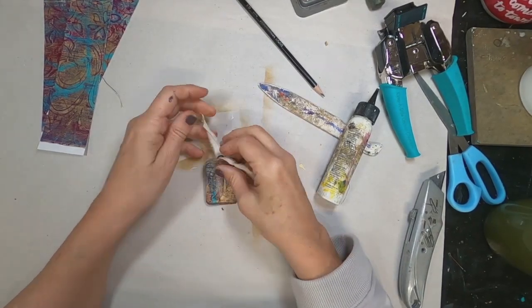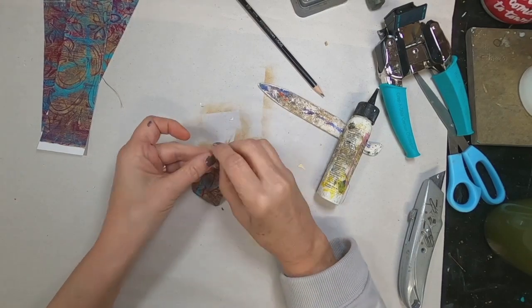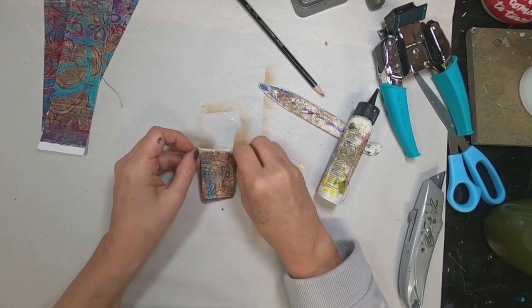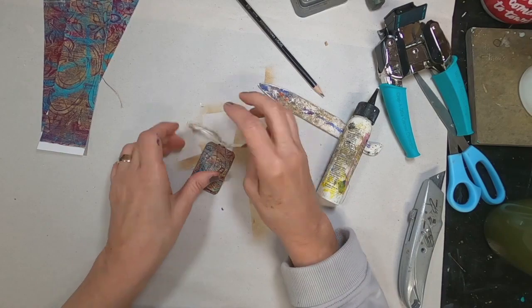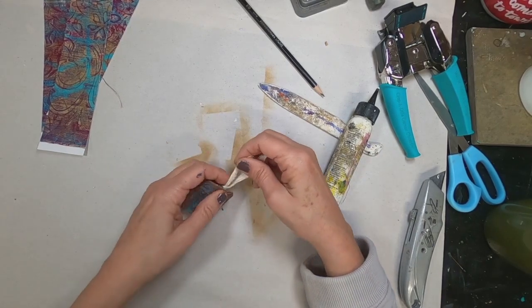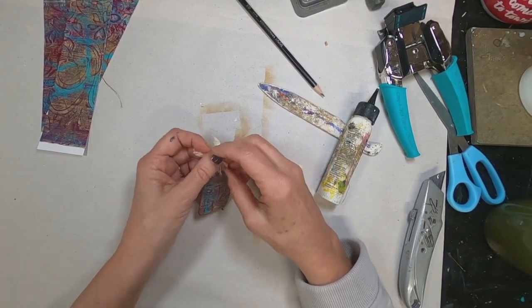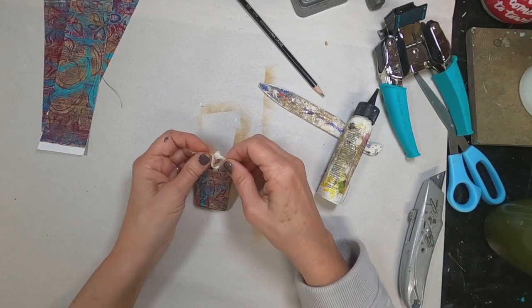And now that I have the paper clip exposed, I'm going to just tie some sari silk on the clip. And we'll call that one complete for now.